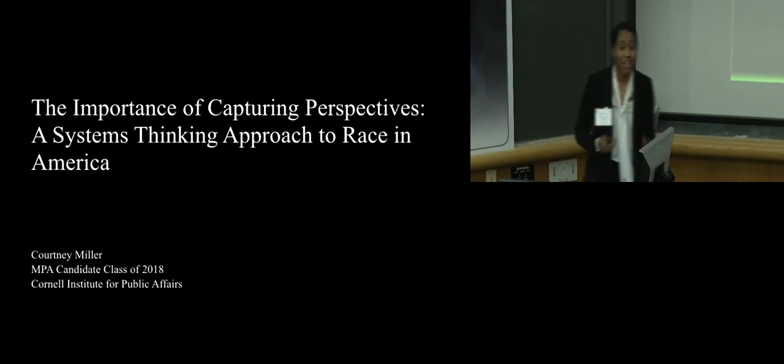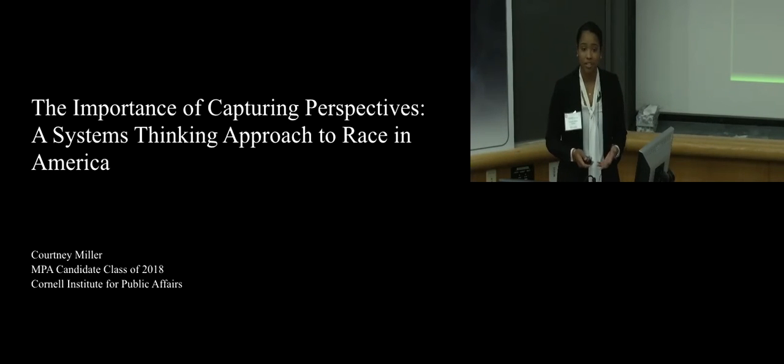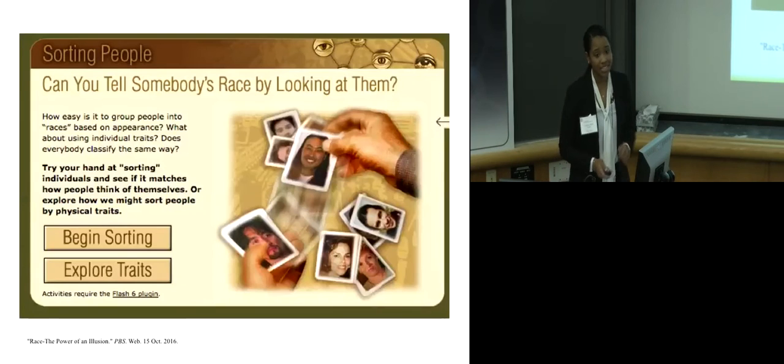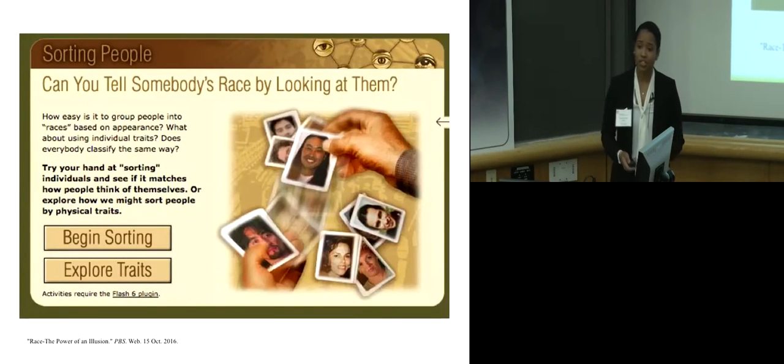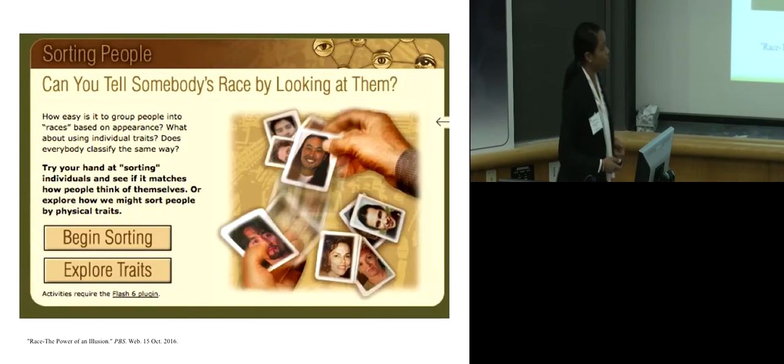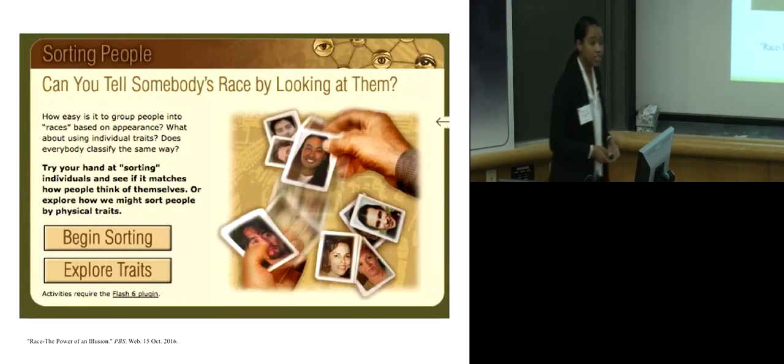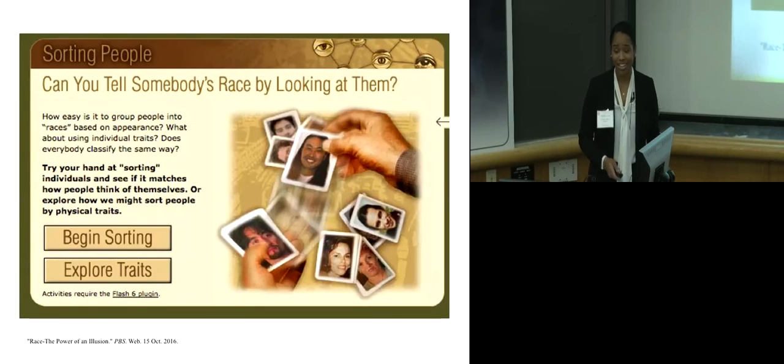When we think of a topic like race, I would suggest that various mental models come to mind. We each individually harbor our own mental models of race - what racial categories are in the United States, how they came to be, who belongs in each category. I'd first like to direct your attention to a PBS activity which really challenges those existing models of race that we each harbor. This activity is entitled 'Can you tell someone's race by looking at them?'